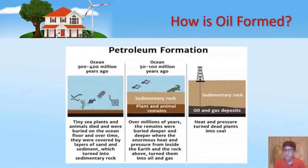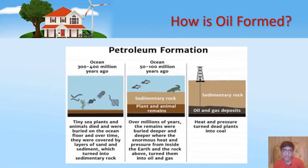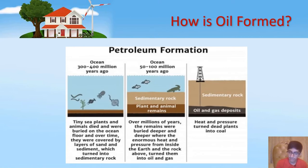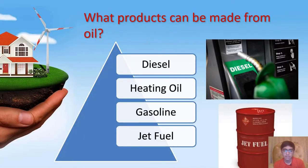Now, how is petroleum formed? This process is the same for both petroleum and natural gas. Around 300 to 400 million years ago, there lived tiny sea plants and animals which died over time, and their remains got pressurized under sedimentary rock and soil, which created a lot of pressure and heat and produced oil and gas. The major products made from oil are diesel, heating oil, gasoline, and jet fuel.